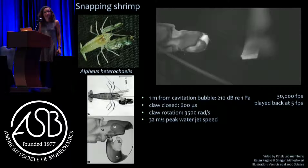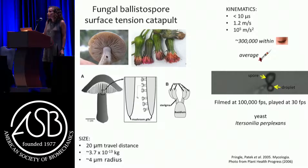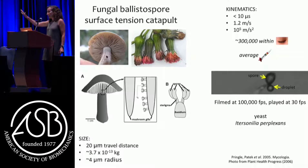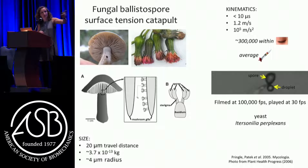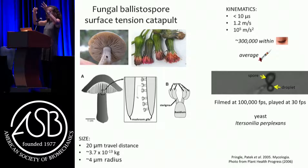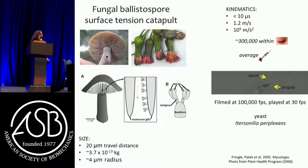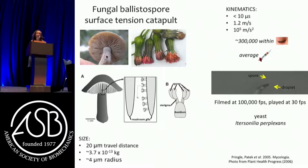A third example is fungal ballistospores - very different in the sense that there's no muscle in the way we normally think of it. These organisms, across the fungi including the mushrooms you eat, grow a droplet on a stem. There's a very thin layer of water on a spore, and when that surface water touches the growing droplet, they fuse and it launches the spore off the stem. Incredibly fast - the average acceleration of a missile is 300,000, and these fit within an eye blink. Their engine is essentially surface tension energy from a droplet.